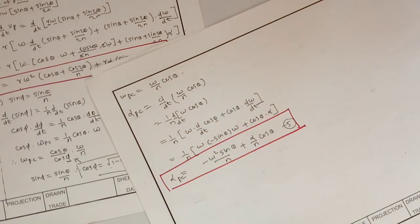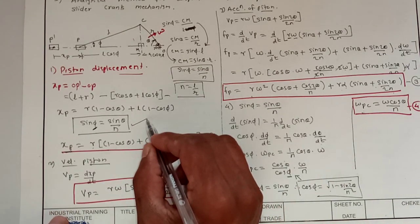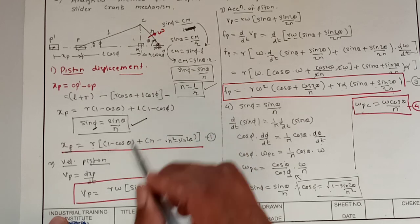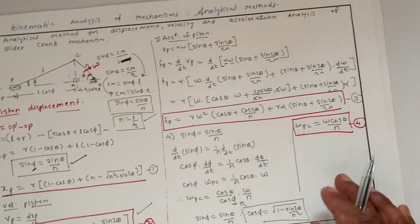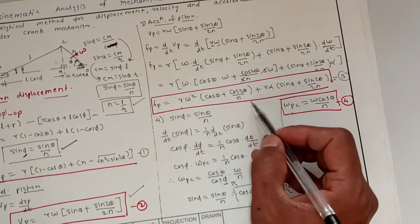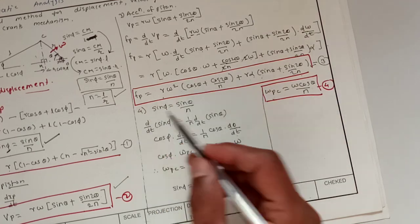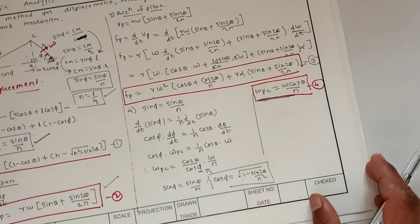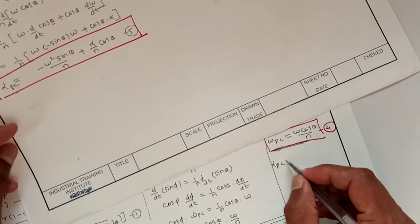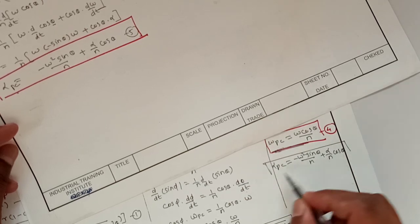This completes the kinematic analysis of the slider crank mechanism. To summarize: the key relation is sin(φ) = sin(θ)/N where N = L/R. Velocity of piston is VP = Rω[sin θ + sin(2θ)/(2N)]. Acceleration is FP = Rω²[cos θ + cos(2θ)/N] + Rα[sin θ + sin(2θ)/(2N)]; when crank speed is constant alpha is zero so the second term cancels. Angular velocity of connecting rod is ω_PC = ω·cos θ / (N·cos φ), and angular acceleration is α_PC = −ω²·sin θ/N + α·cos θ/N.